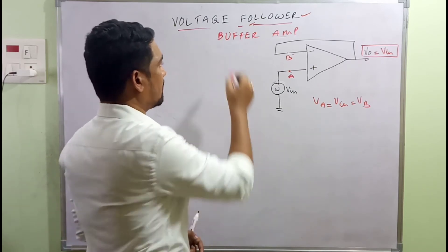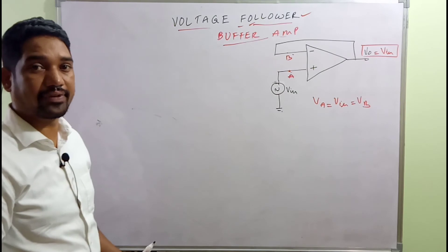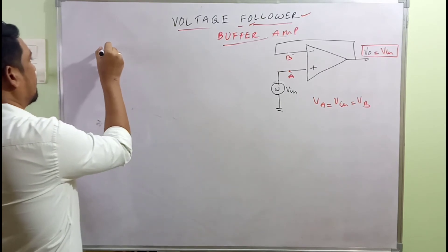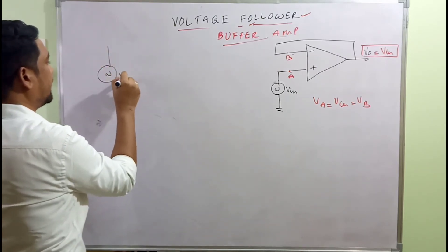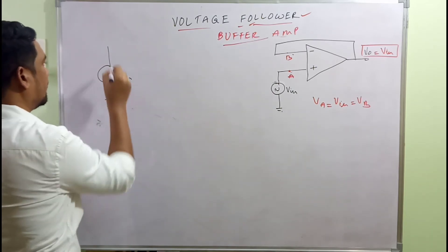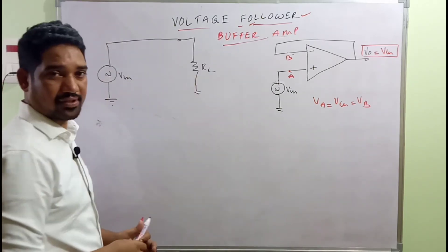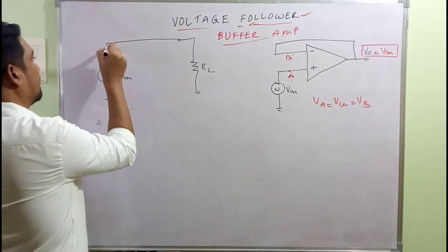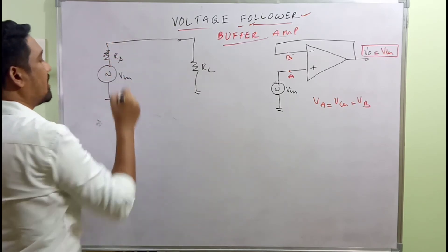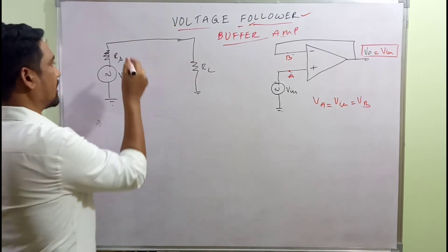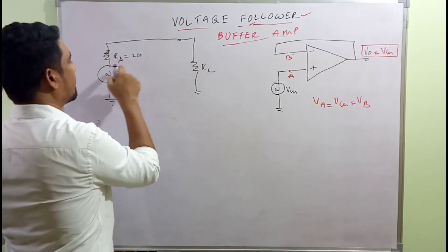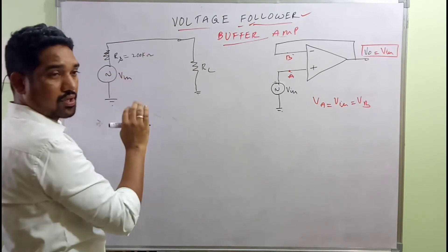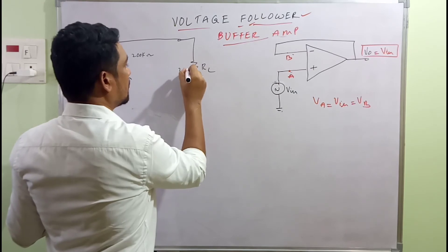This configuration is known as a voltage follower — the output voltage simply follows the input voltage. Now, why is it also called a buffer amplifier? Consider a simple circuit where we have V-in driving a load through a source resistance RS that cannot be neglected. Let RS be 200 kilo-ohms and RL be 2 kilo-ohms.